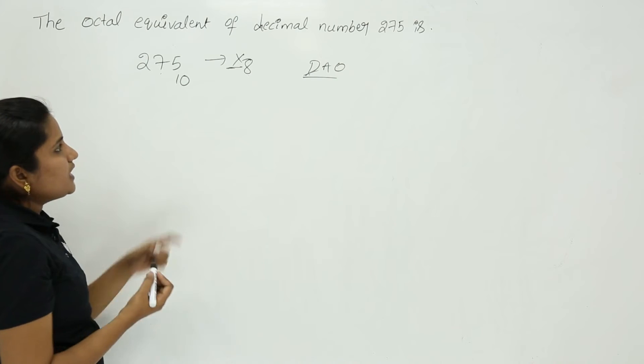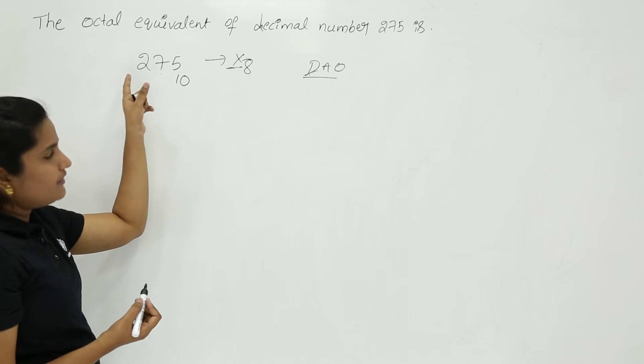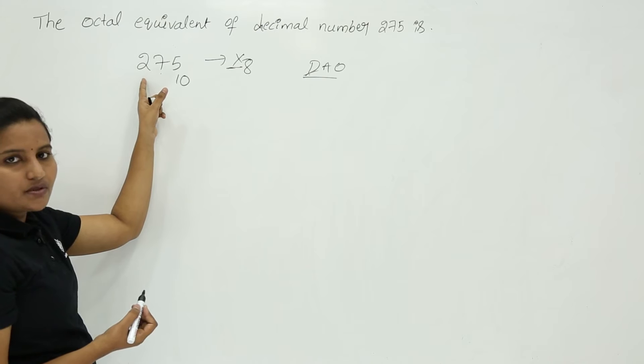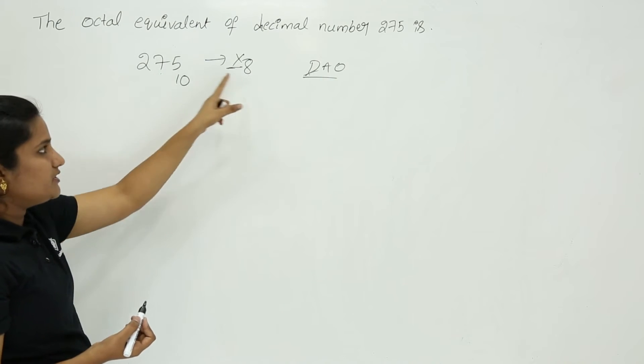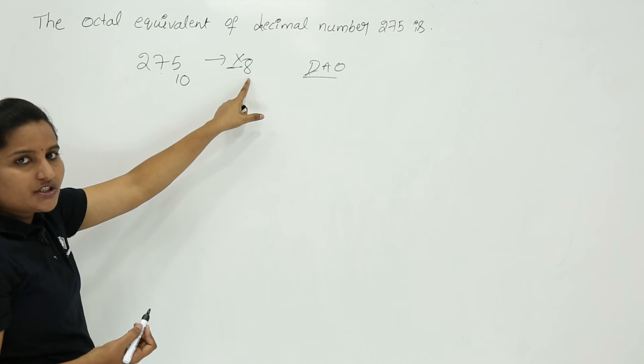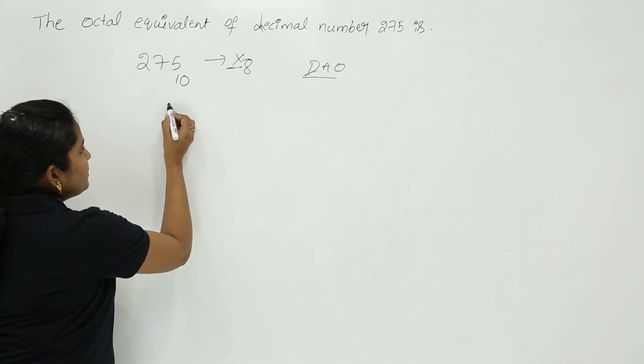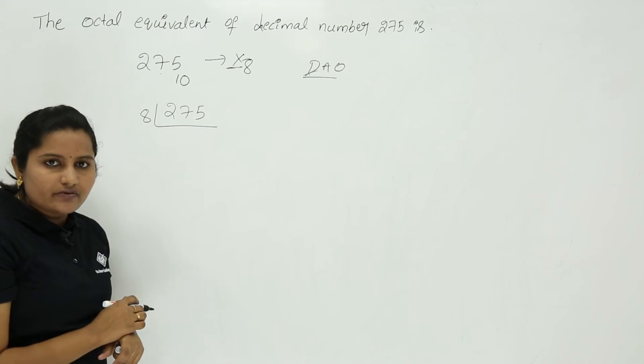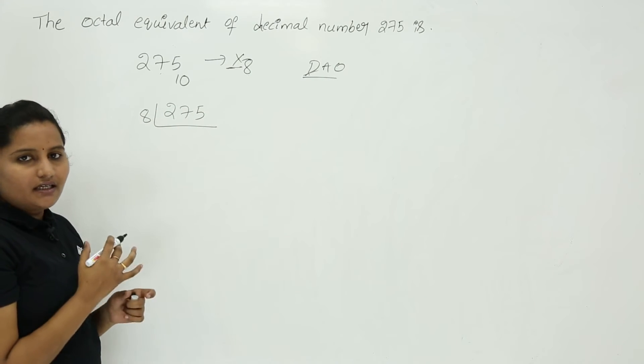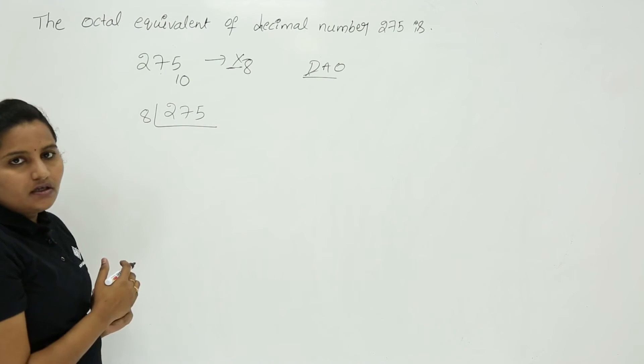Here to find out the octal equivalent of the given decimal number, you need to take the successive division of given decimal number with respect to destination number system. So here 275 with respect to 8, if you take successive division, it will result in the equivalent octal number.